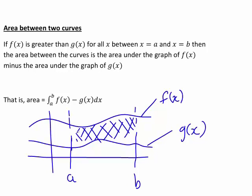In this case we can then find the area between the curves, which is the area I've shaded here, as the integral from a to b of f(x) minus g(x) with respect to x. That is, it's the integral from a to b of the upper curve minus the lower curve.